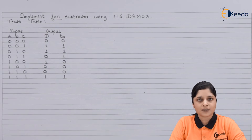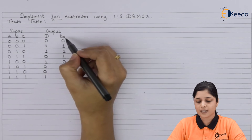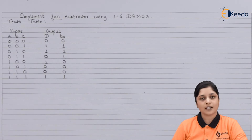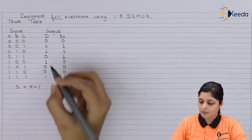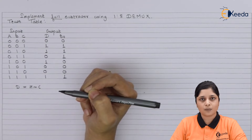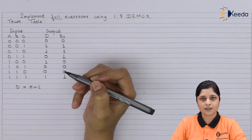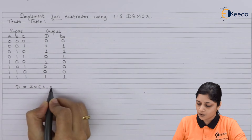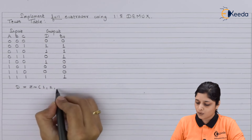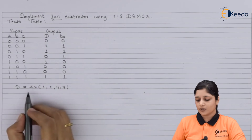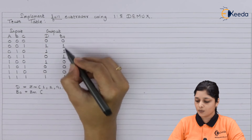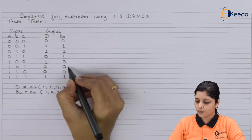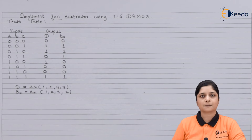Now for realization purpose we focus on two outputs: difference and borrow. For that we require the expressions. For the difference equation: D = Σm(1, 2, 4, 7). You focus on the ones present at the difference output and write down the minterms. Then for borrow: B = Σm(1, 2, 3, 7). In this way you design the expressions for difference and borrow.